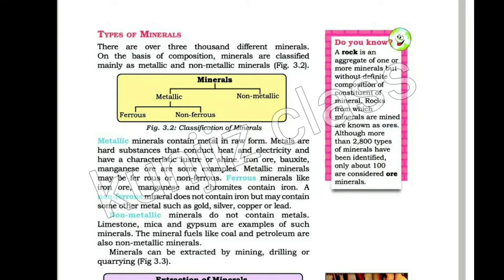Ferrous minerals like iron ore, manganese and chromates contain iron. A non-ferrous mineral does not contain iron but may contain some other metals such as gold, silver, copper or lead.